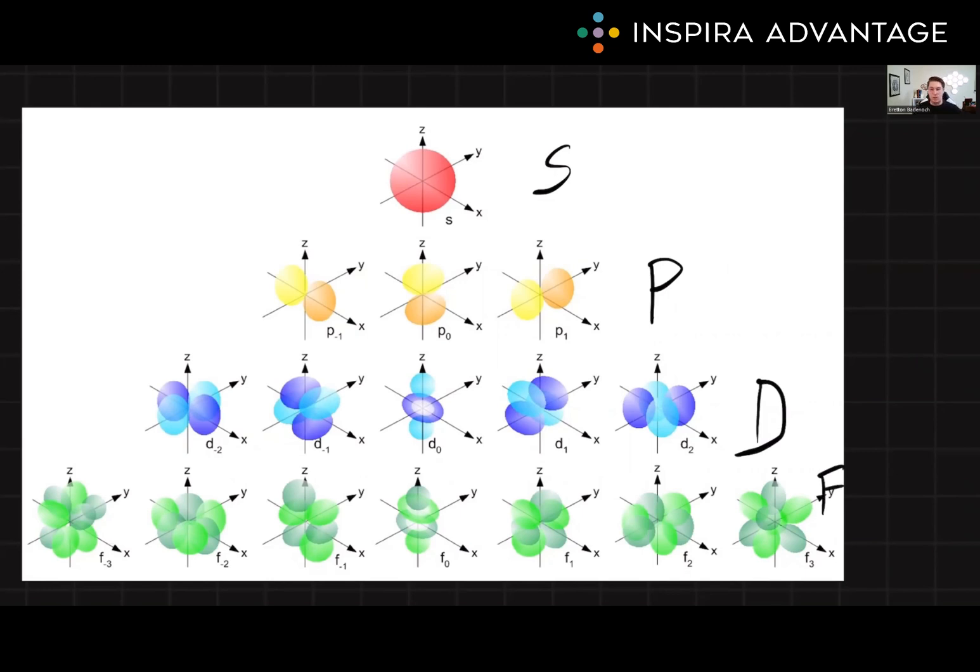S orbitals up top and red here are spherical in shape and increase in size with increasing principal quantum number n. So the higher the n, the bigger the sphere. Our P orbitals are dumbbell shaped, existing in three orientations. They can be on the x-axis, the y-axis, or the z-axis.